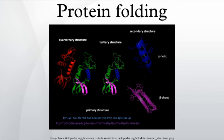Under some conditions proteins will not fold into their biochemically functional forms. Temperatures above or below the range that cells tend to live in will cause thermally unstable proteins to unfold or denature. High concentrations of solutes, extremes of pH, mechanical forces, and the presence of chemical denaturants can do the same.